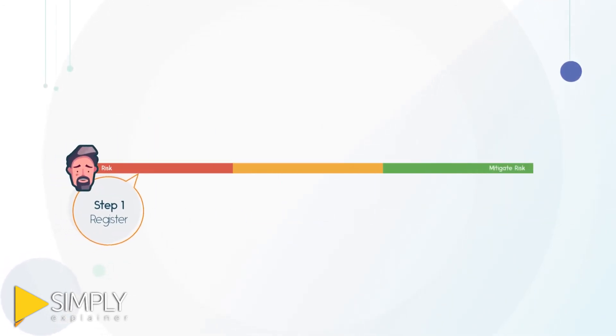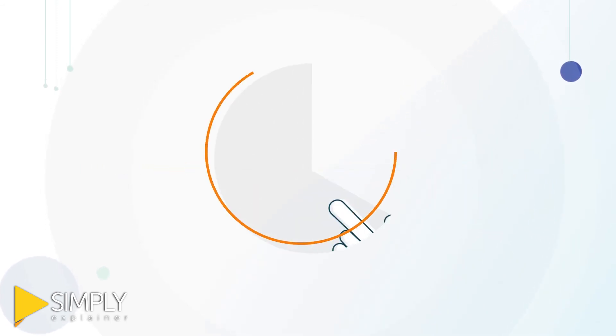All staff members start with high risk status. As they sit the training, pass their assessments and sign the relevant policies, they will mitigate their risk. Simple!